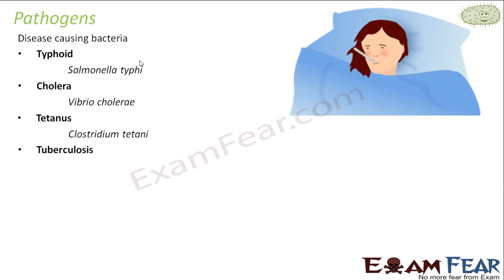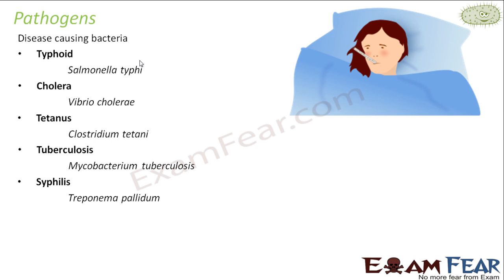Tuberculosis, often known as TB, is caused by Mycobacterium tuberculosis. The names are quite tough but it is good to remember them because these are very common diseases. Please remember to write the binomial name correctly: genus should start with a capital letter, species with a small letter, written in italics, and spelling should be correct.